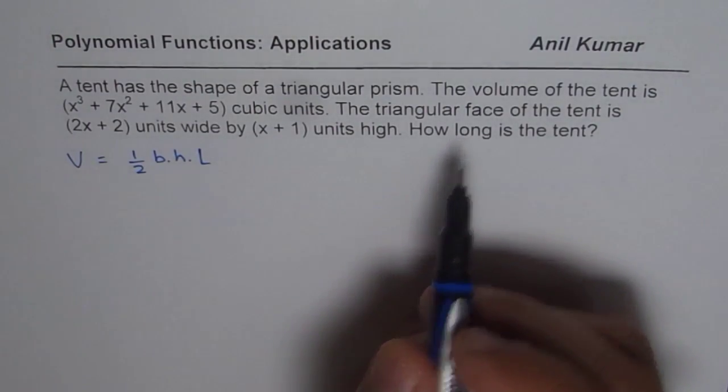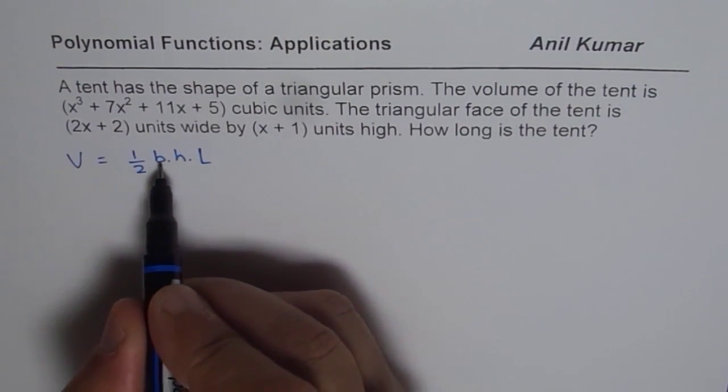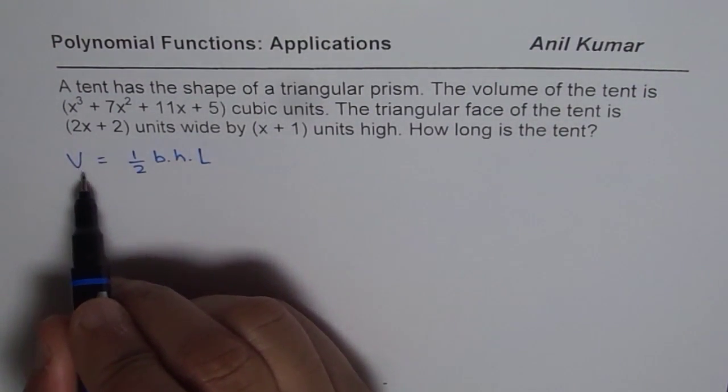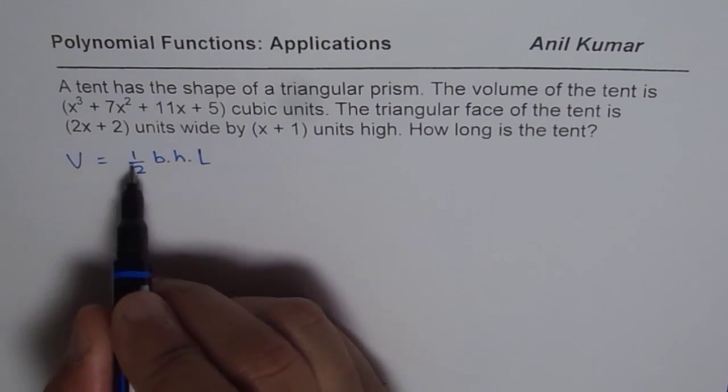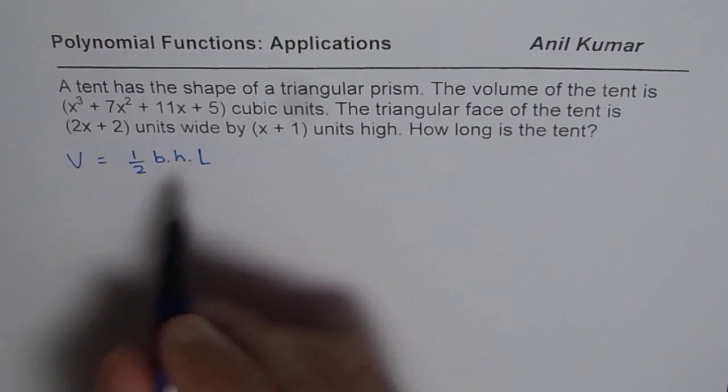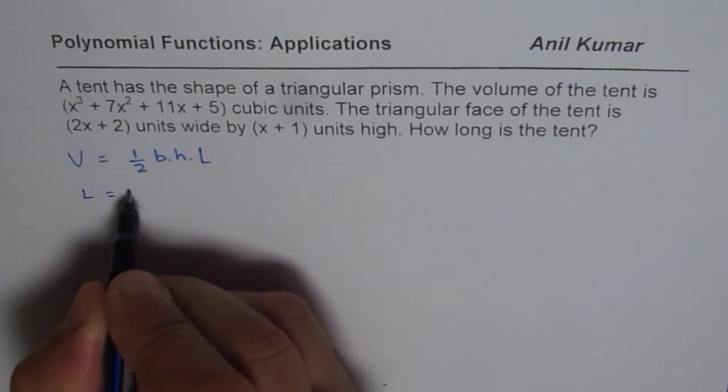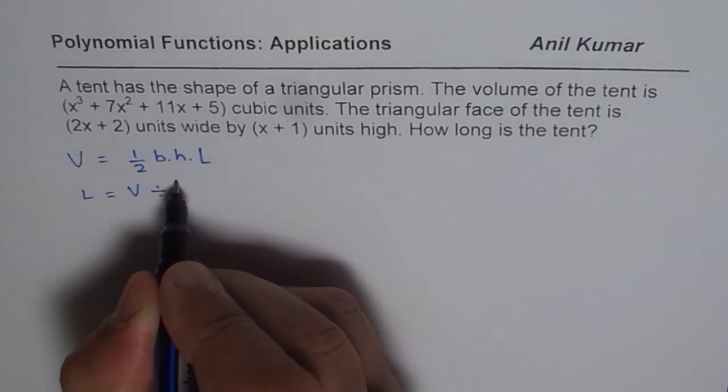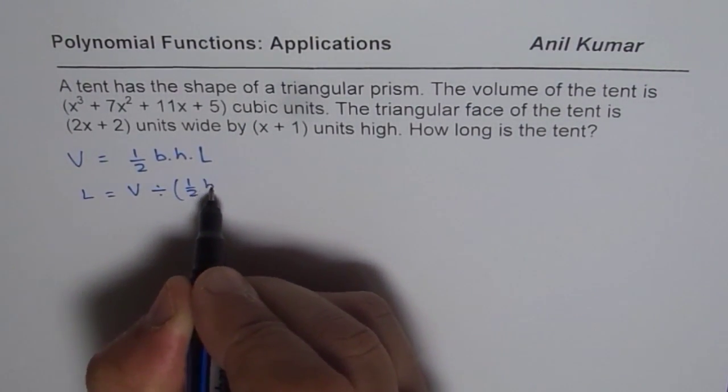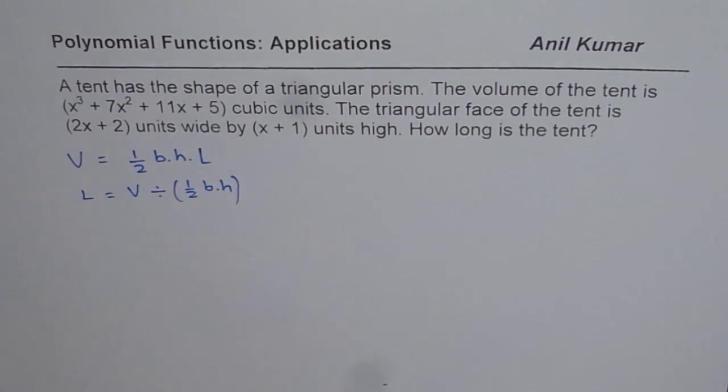Since we need to find the length, we know base and height and the volume. We can divide volume by half base into height to get length. The length is equal to volume divided by half base times height. That is the strategy for us.